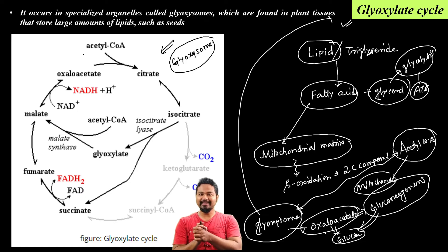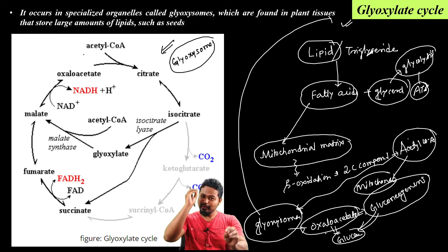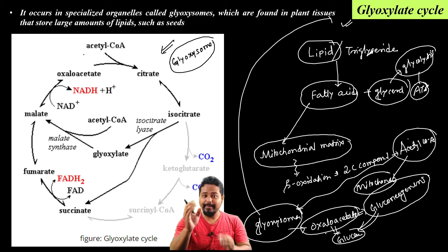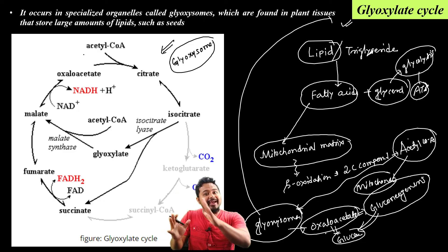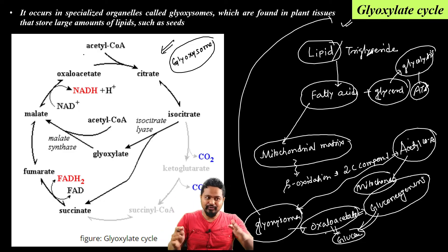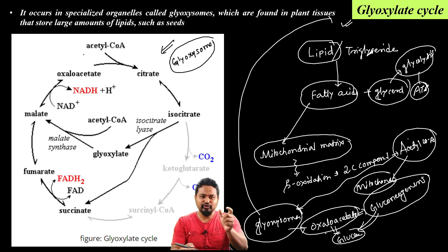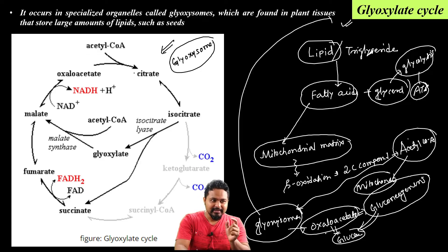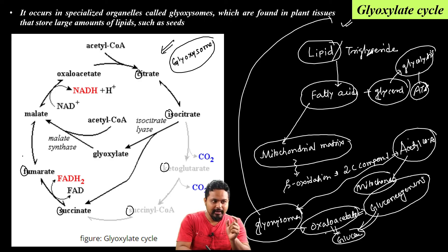The glyoxylate cycle is exactly the same as the Krebs cycle, but some reactions are bypassed. For example, in the Krebs cycle, some reactions occur which are bypassed in the glyoxylate cycle.